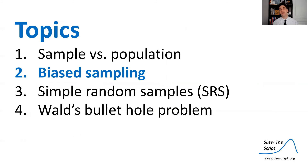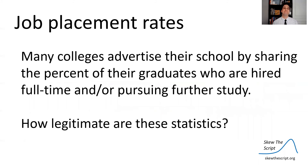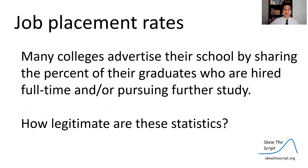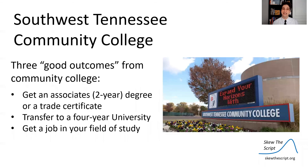Now there are good ways and there are bad ways to do the sampling, and we're going to talk about some bad ways first. One statistic a lot of colleges report is their job placement rate. Many colleges advertise their school by sharing the percent of their graduates who are hired full-time or pursuing further studies in graduate school. We're going to look at the legitimacy of these statistics and see if they are potentially misleading.